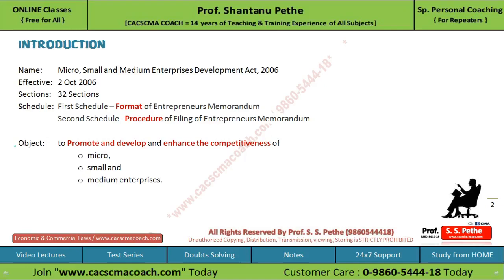The name of this act is Micro, Small and Medium Enterprises Development Act 2006. This act came into force on 2nd of October 2006. There are total 32 sections and two important schedules. Schedule 1 में दे रखा है Format of Entrepreneur Memorandum जो इनको file करना रहता है, और Schedule 2 में दे रखा है Procedure of Filing the Entrepreneur Memorandum.